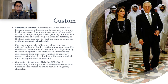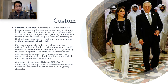One defect of customary international law is the difficulty of determining when a practice can be considered to have hardened into custom and thus acquired obligatory character. Unlike conventional law, custom is not formally promulgated or established at a definite time. Another problem is its inability to adjust to the swiftly moving developments of an international society which it is supposed to regulate.